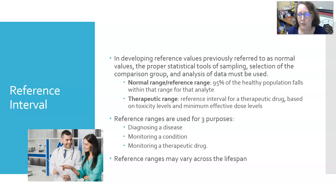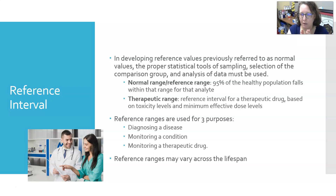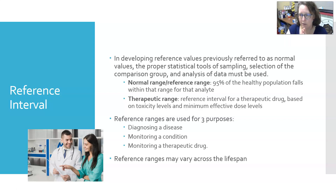Therapeutic ranges are the reference interval for a therapeutic drug. Most healthy people would not be on the drug, which is why it has a different name. That range is established based on the toxicity levels and the minimum effective dose level for that specific drug. The lower end of the range is the minimum effective dose, and the higher end is the toxicity level. If you're above the high end, you could be toxic; if below the low end, the drug may not have its therapeutic effect. These ranges only apply to drugs where the toxicity level is close to the therapeutic level.